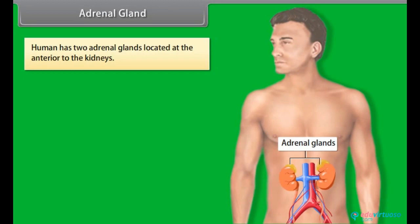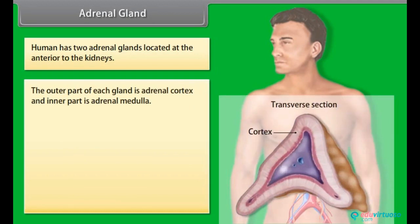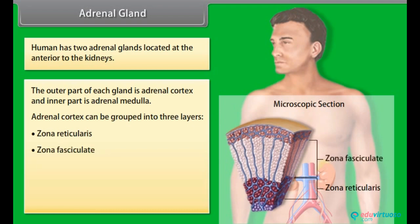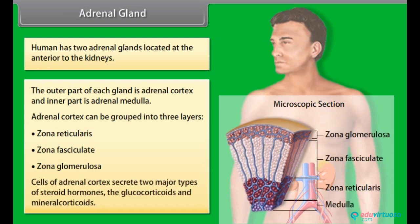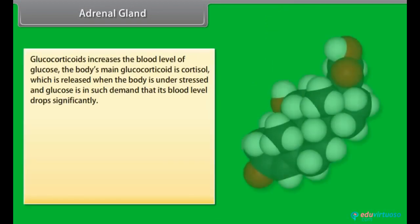Humans have two adrenal glands located anterior to the kidneys. The outer part of each gland is the adrenal cortex and the inner part is the adrenal medulla. The adrenal cortex is grouped into three layers: zona reticularis, zona fasciculata, and zona glomerulosa. Cells of the adrenal cortex secrete two major types of steroid hormones: glucocorticoids and mineralocorticoids. Glucocorticoids increase the blood level of glucose; the body's main glucocorticoid is cortisol, which is released when the body is under stress.